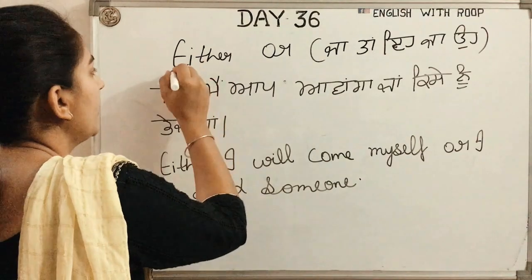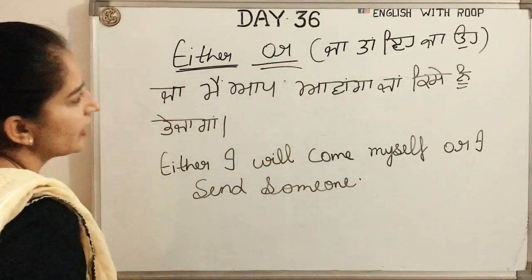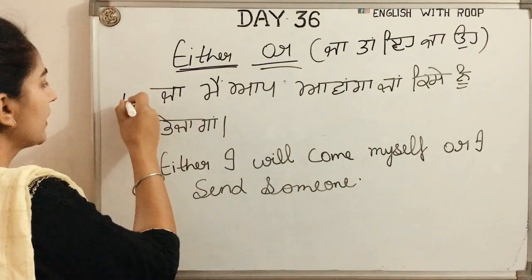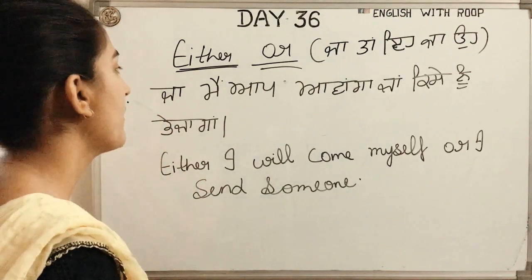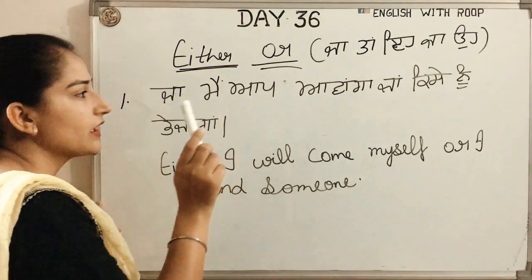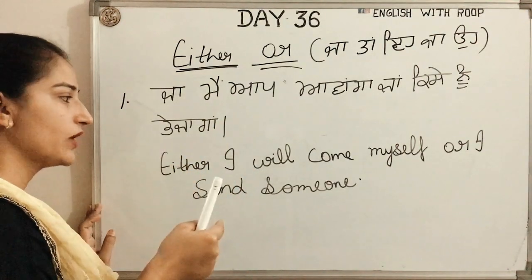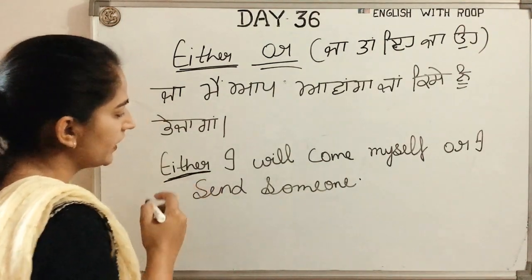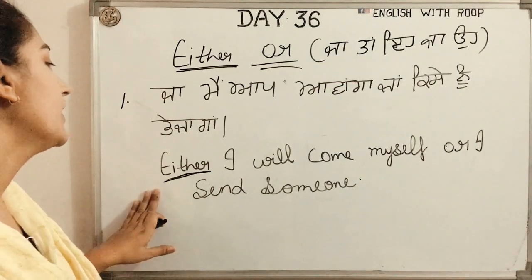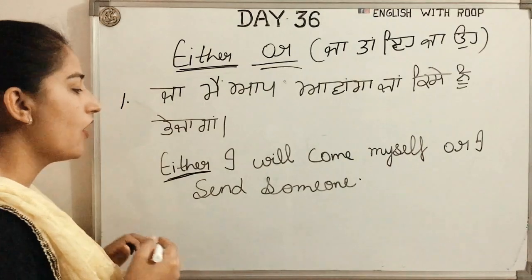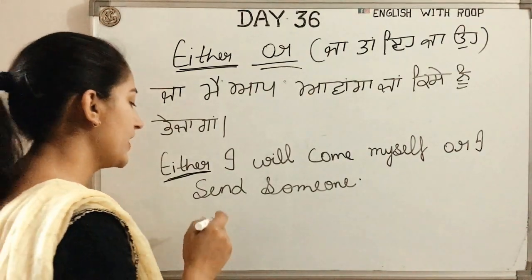Either/or. Let me give you an example. The question is: where will I go? Either I will come myself, or I will send someone. So either/or gives you two choices — one thing or the other.